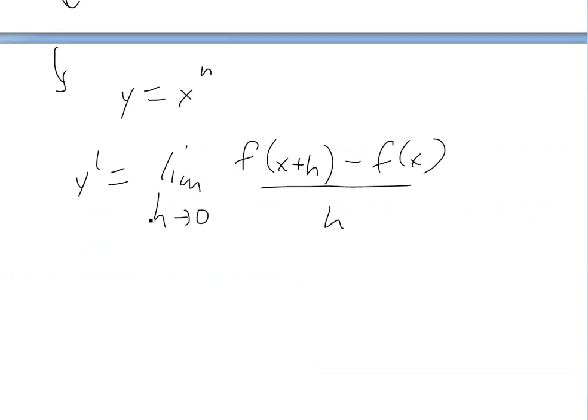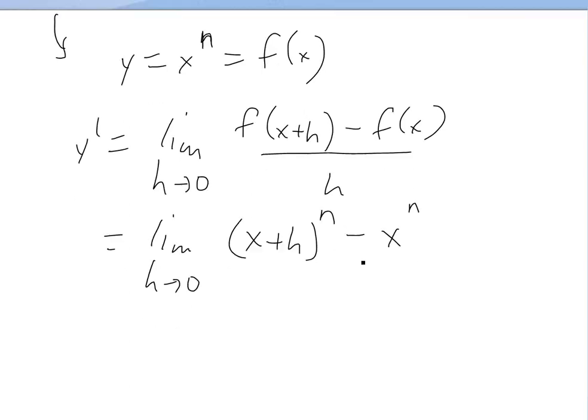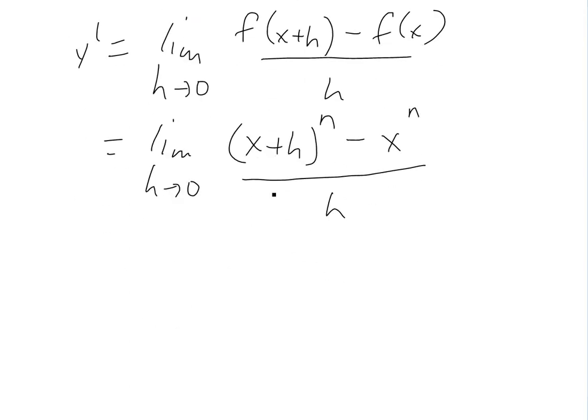If you were to use the definition of derivative, we know that y equals x to the n. The definition of derivative is y prime equals limit as h approaches 0 of f of x plus h minus f of x, all divided by h. That's the slope as h goes to 0. If you plug that in, limit h approaches 0, we're going to get x plus h power of n minus x to the n, all divided by h. So this is y prime.